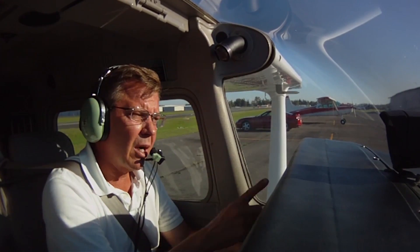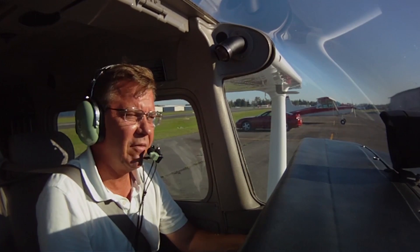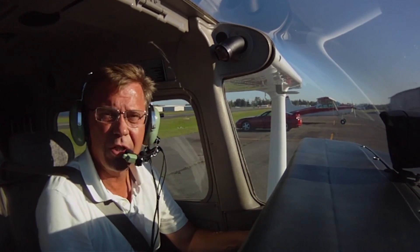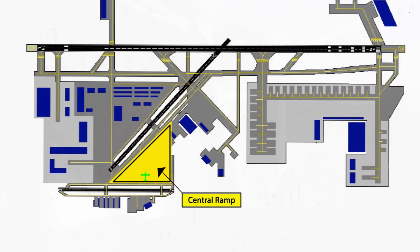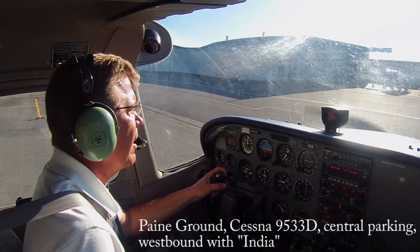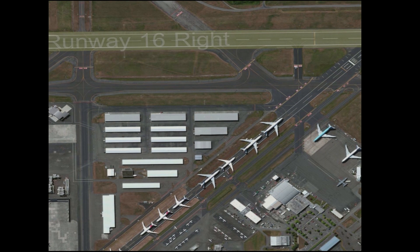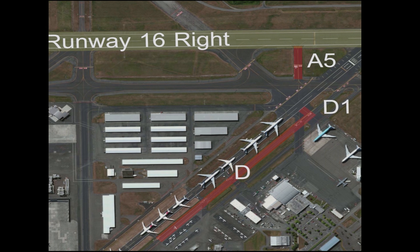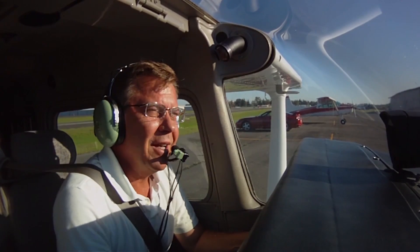We identify ourselves as Cessna 9533 Delta. In America, every airplane registration starts with 'N' — November — indicating it's a US-registered aircraft. We're parked on the central ramp and going westbound with India. The call: 'Paine Ground, Cessna 9533 Delta, central ramp, westbound with India.' The controller clears us: '33 Delta, runway one six right, Alpha five intersection, taxi via Delta, Delta one, cross runway one one, 33 Delta.'